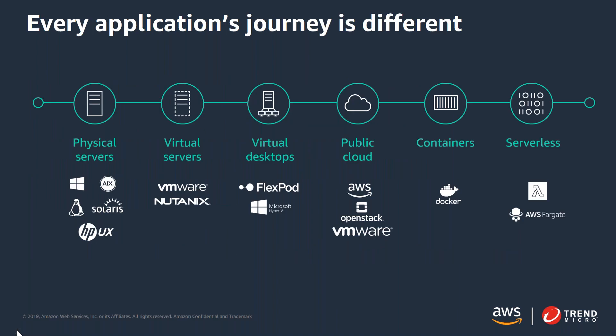Hybrid cloud can mean a lot of things — every organization and every business and application's journey is different. We started with physical servers, then quickly adopted virtualization and hyperconverged infrastructure for VDI. Then we started hearing buzz around cloud and testing the waters — some businesses started full data center migrations, others redesigned applications to function in a cloud model. Now we're hearing more about Docker and Kubernetes and touching on serverless-based architectures. It's important to remember that all fundamental aspects of a business's journey to hybrid cloud must include security, leveraging a single solution that can secure applications throughout the entire journey.